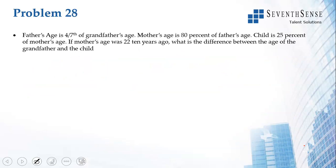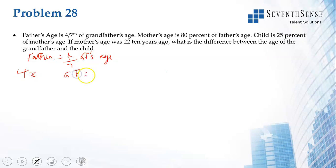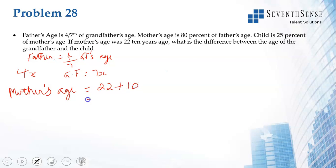Next problem: Father's age is 4/7th of grandfather's age, so we take father's age as 4x and grandfather's age as 7x. Mother's age is 80% of father's age, and child is 25% of mother's age. Mother's age was 22 ten years ago, so presently mother's age is 22 + 10 = 32.